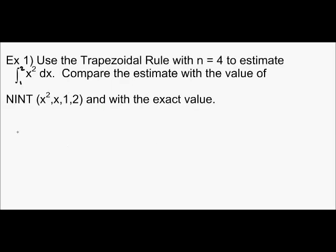Example 1: use the trapezoidal rule with n equals 4 to estimate the integral from 1 to 2 of x squared dx. Compare the estimate with the value that you calculate in your calculator and with the exact value. The first thing that we're going to do is partition this interval [1,2] into 4 subintervals. So h equals 2 minus 1 over 4, which is 1 divided by 4, we get 1 fourth. So each interval will be 1 fourth.